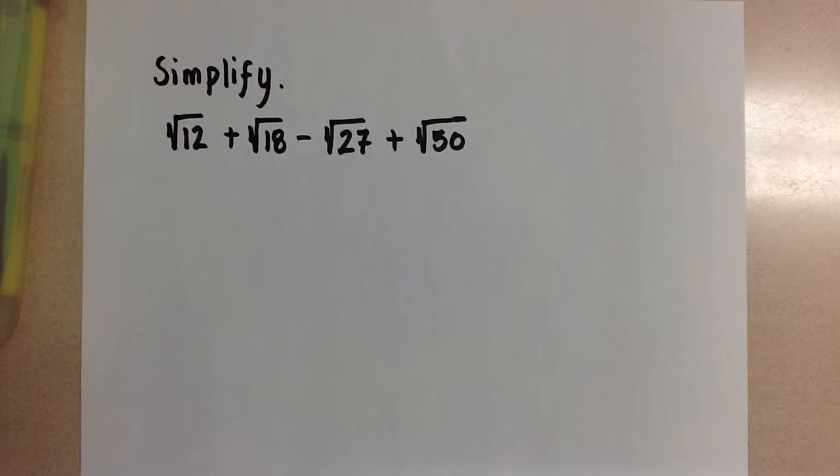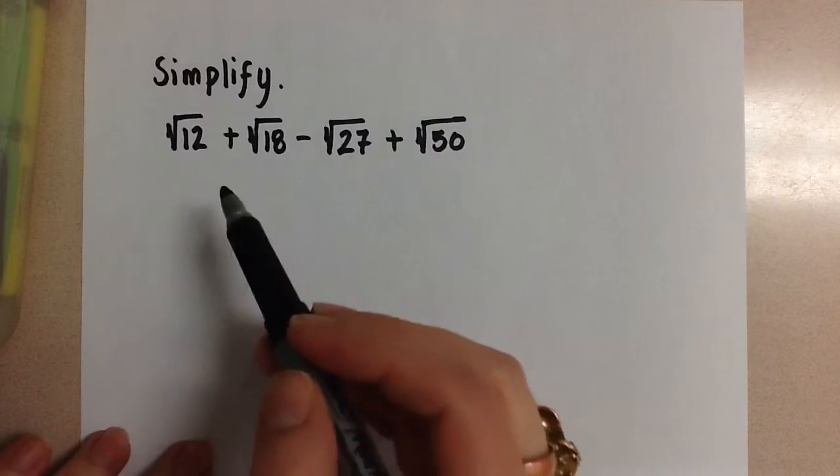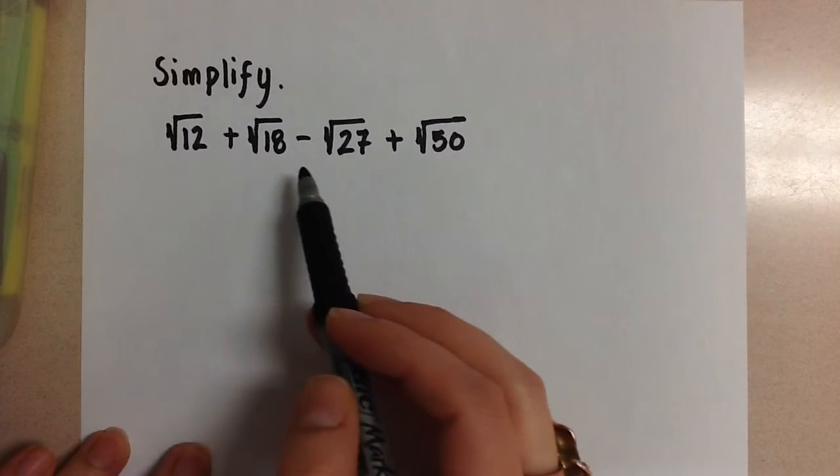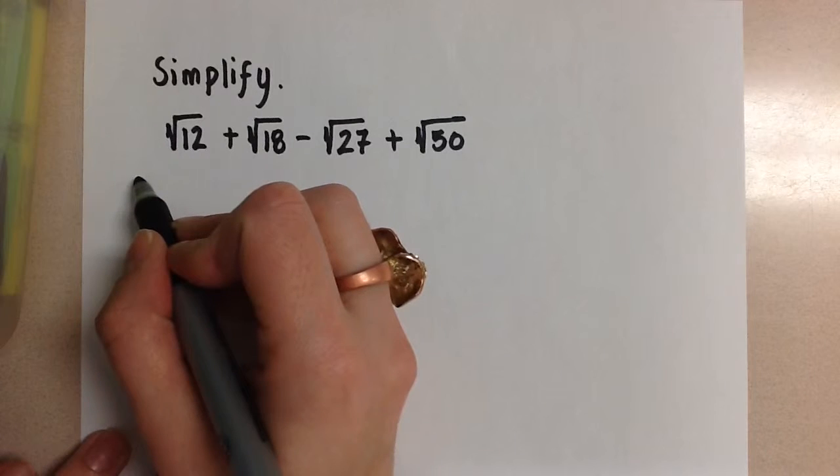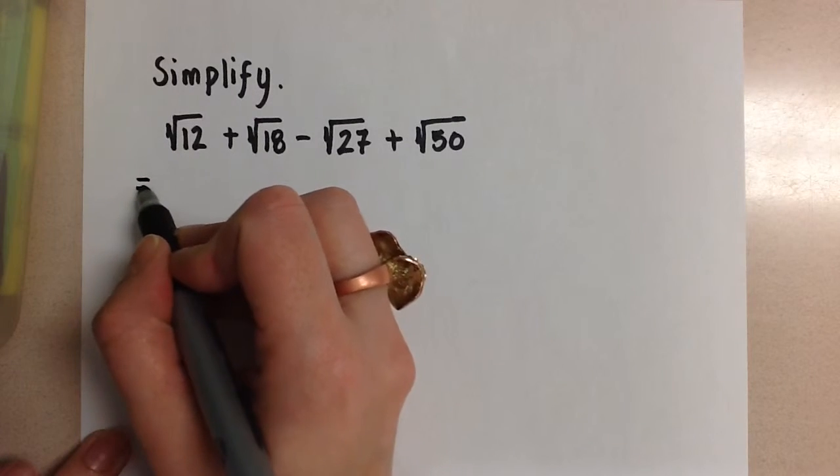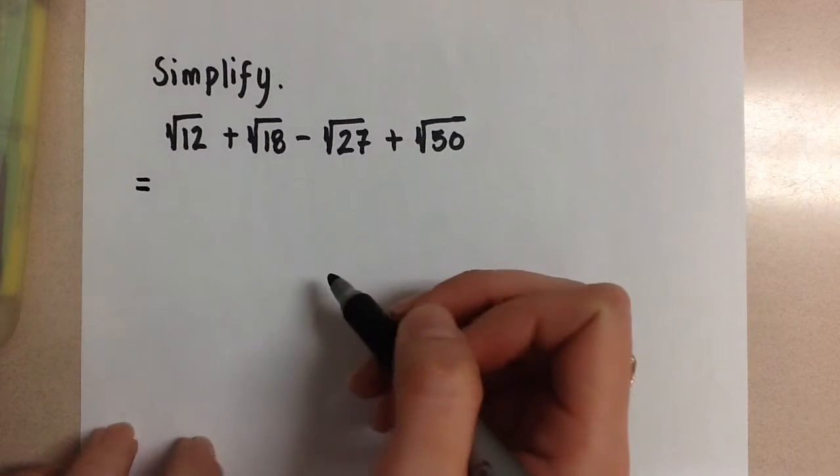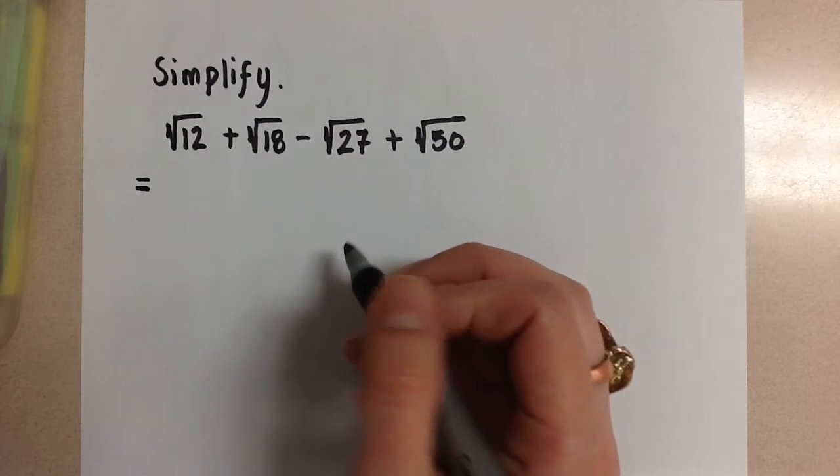Here we are simplifying radicals. Right now none of these in this form are like radicals, so we're going to work on reducing each one to simplest form first and then see if we can combine any of these.